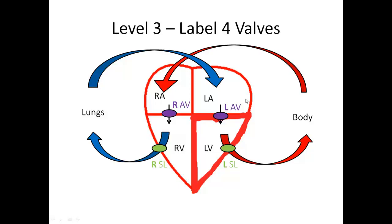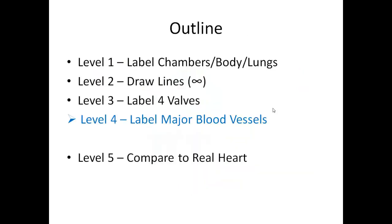Always remember the alternative names: the left AV is also known as the bicuspid or mitral, and the right AV is also known as the tricuspid. So when it comes time for an exam, you're not worried about thinking through the answer — it's already written on your diagram. That's it for Level 3. This is the last level before some practice questions.